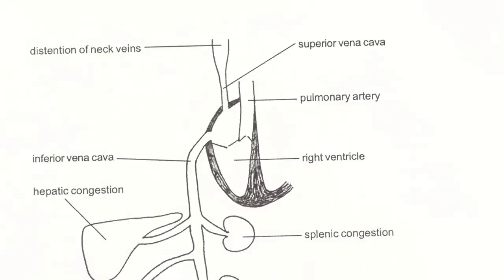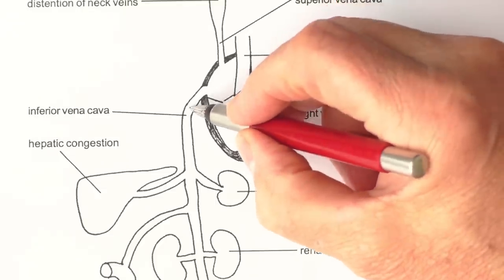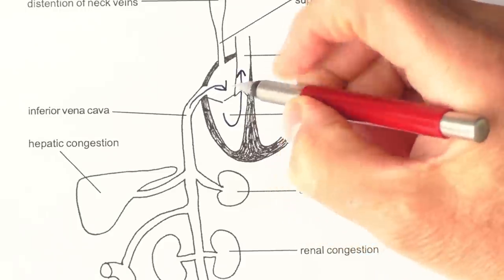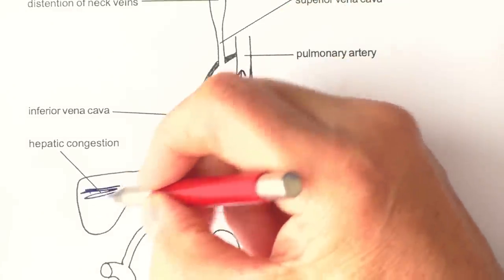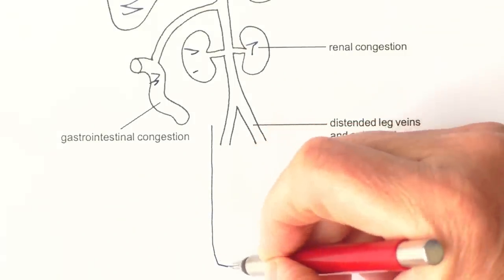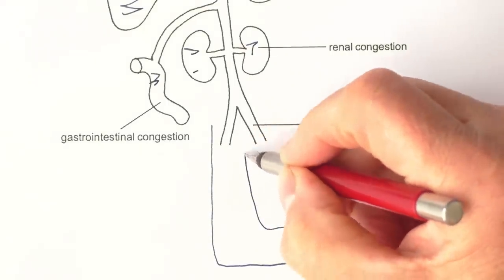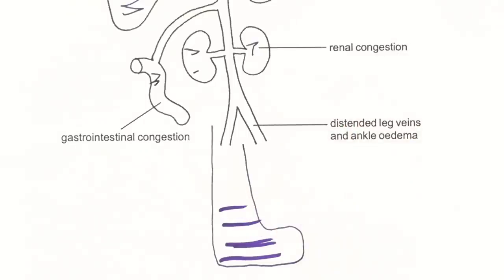There can also be right-sided heart failure. Here the right side is not pumping properly, so blood trying to return has a backlog, causing increasing pressure and accumulation of fluids in the liver, spleen, intestine, and kidneys. These patients can also get swollen feet and puffy ankles because of the backlog of blood returning from the legs.